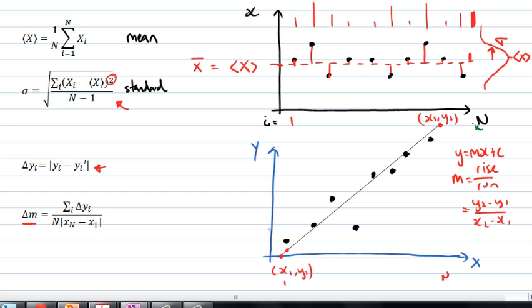So in fact, that difference, delta y1, is really equal to the length between these two points, the distance between these two points. And in fact, the absolute value signs mean that this distance has to always be positive. So this one here is positive, and it's small. This one here is positive.